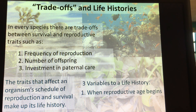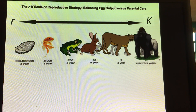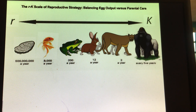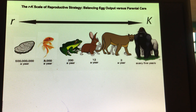Traits that affect an organism's schedule of reproduction and survival make up its life history. The different parts of a life history are: when does reproductive age begin, how often do they reproduce, and how many offspring each time? This can be summarized into two different groups: R-selected species, or R-strategists, and K-selected species.